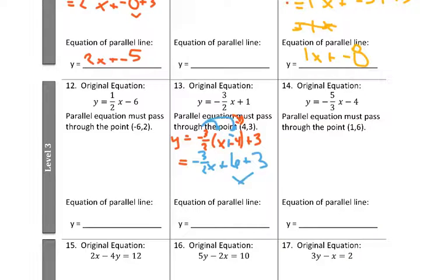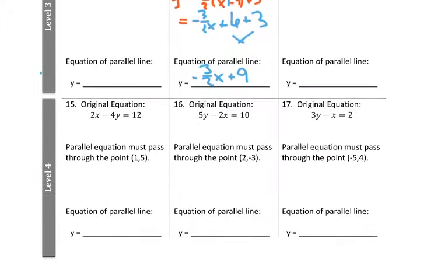Combine these two like terms here, and our answer should be negative 3 halves, x, plus 9. Now, let me give you a hint for level 4.